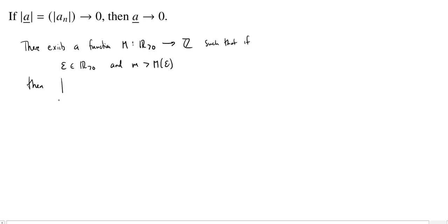then the distance between the nth, or in this case, the mth term of the sequence, which will be the absolute value of a sub m and the proposed limit zero should be less than epsilon. So this is our definition of the absolute value sequence converging to zero.